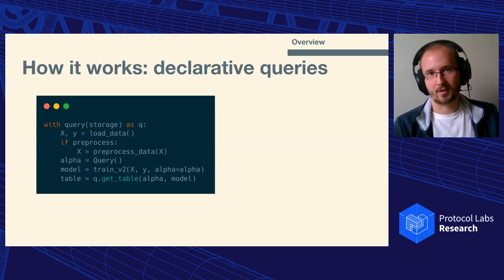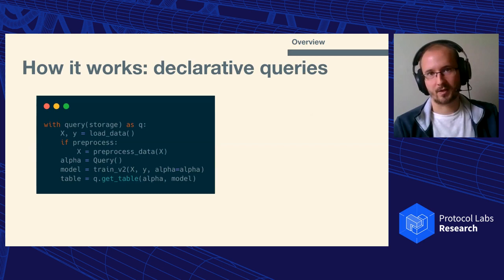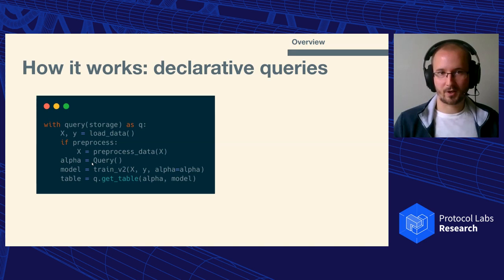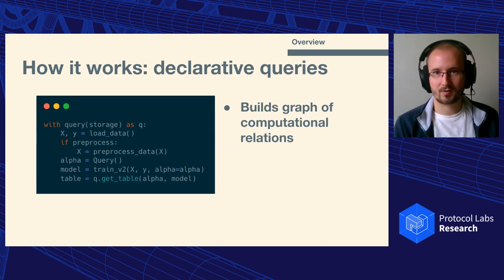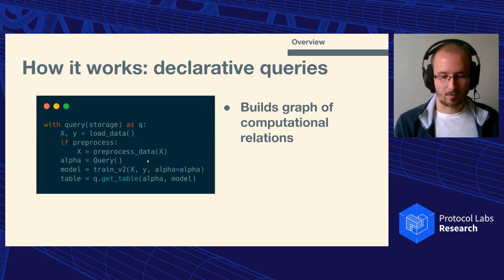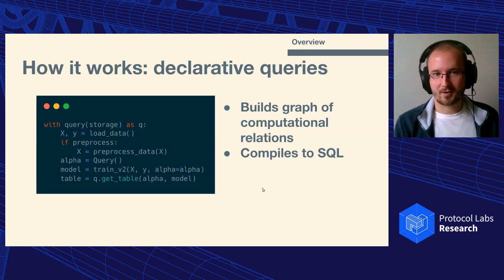By combining this with some imperative control flow, you can do very expressive imperative queries to your storage. You can take a piece of code, rearrange some parts of it, maybe add some more logic — this gives you a very powerful way to interact with storage directly using the programming language you're most familiar with. The second component is a declarative query interface, which is complementary to this imperative query interface. The idea is that this code is interpreted in a very different way — behind the scenes it builds a graph of computational relations instead of computing anything, defining a combinatorial representation of your workflow that can be compiled to SQL.